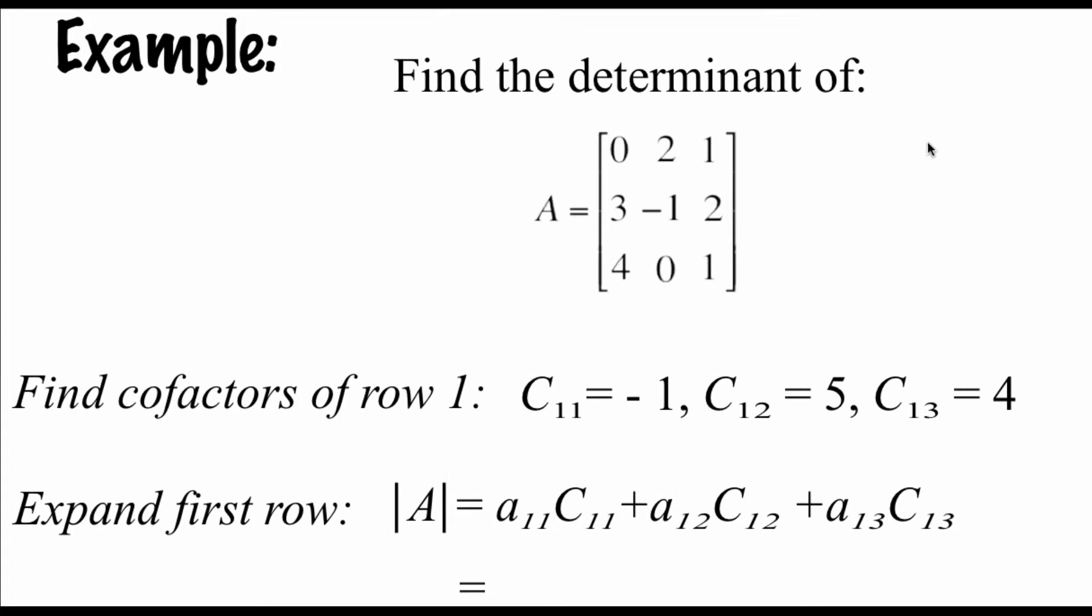So we're going to look at finding the determinant of this 3 by 3 square matrix by this cofactor expansion. We're going to look at the first row of this matrix, and I've already got the cofactors listed out there, but I'm going to remind you how to find those things. In order to find the cofactors, we first have to find the minors. If we're looking at the first row, first column, we're going to cross those things off and then do the determinant of what's left over. So negative 1 times 1 is negative 1, minus 0, we get negative 1.